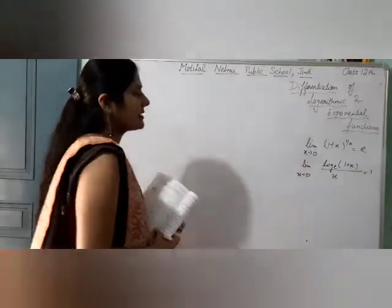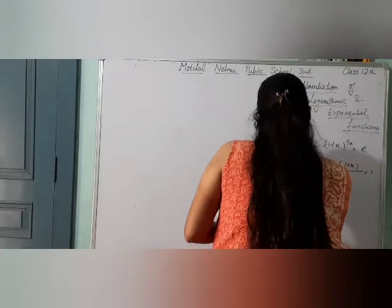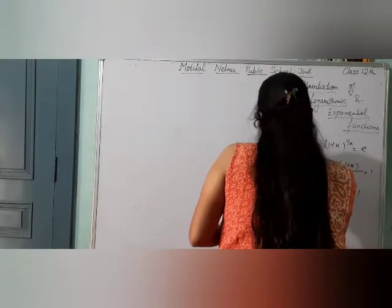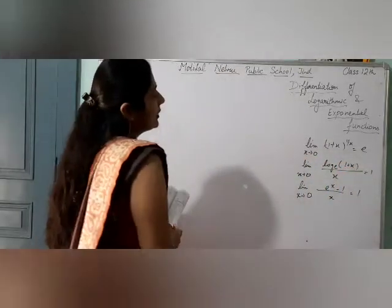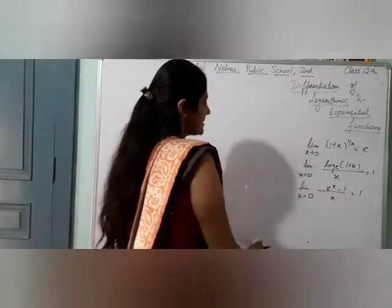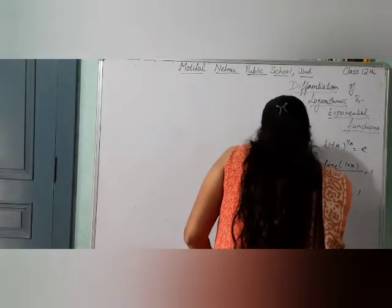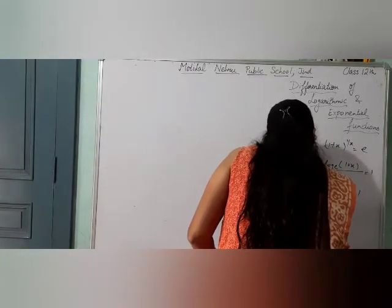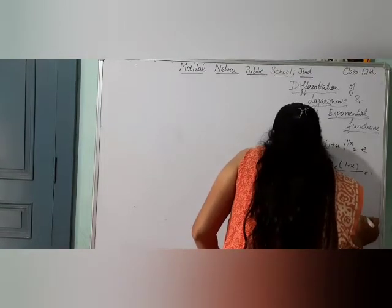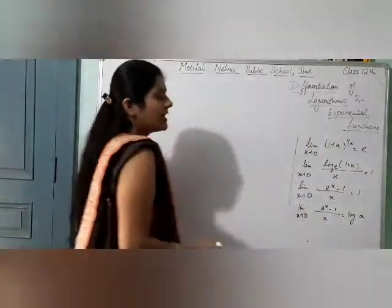The limit of log(1 + x)/x equals 1. The limit of (e^x − 1)/x as x tends to 0 is equal to 1. After that, the last limit: as x tends to 0, (a^x − 1)/x is equal to log a. These are limits we covered last year.